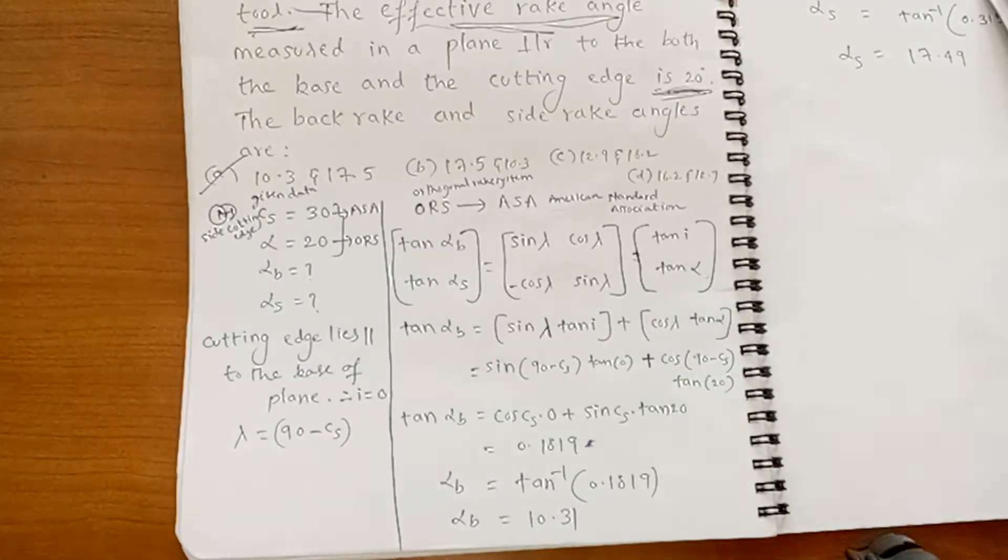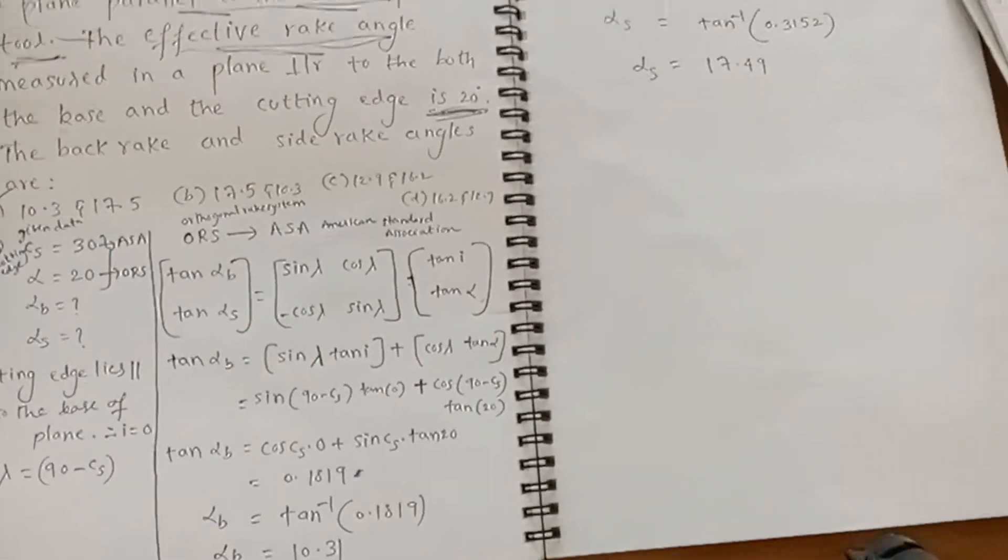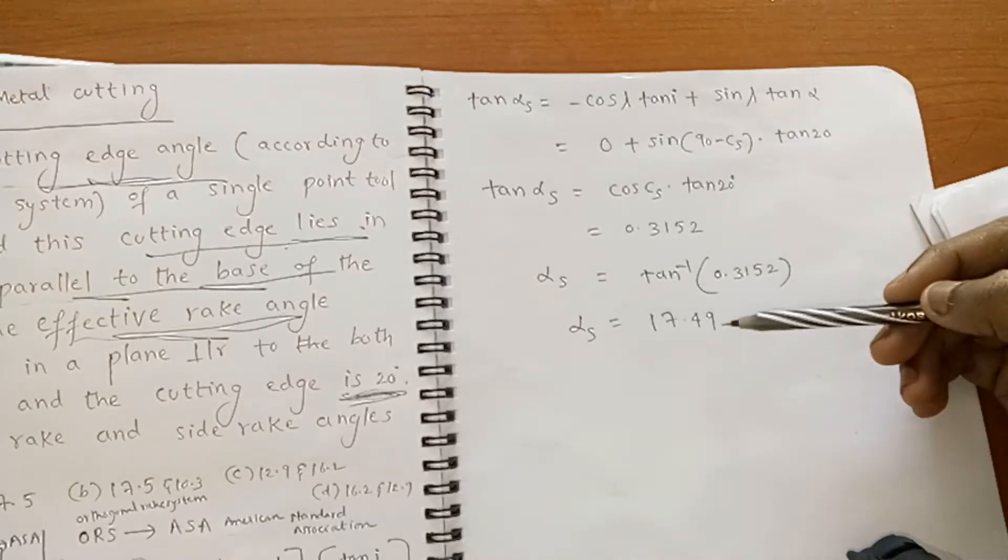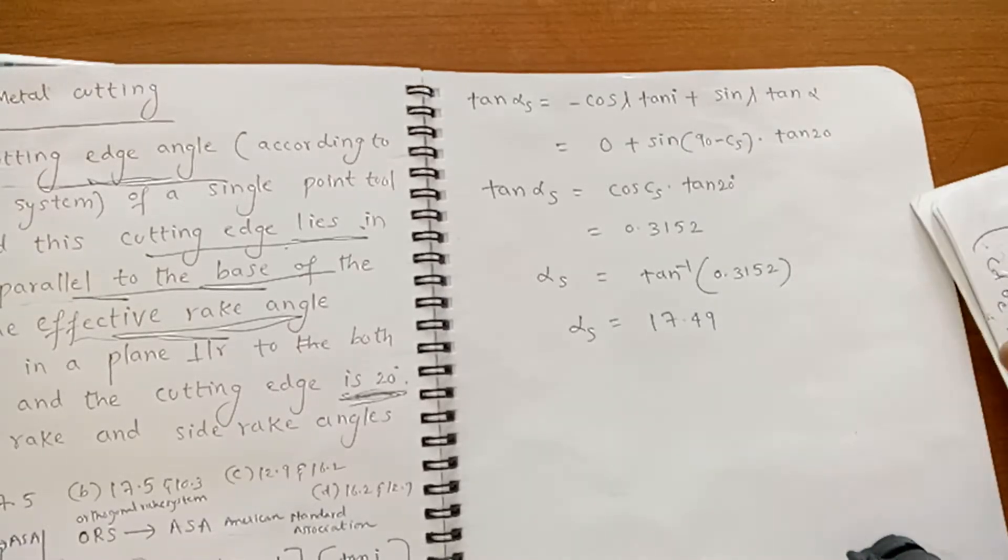The same with alpha_S also. You will get alpha_S equal to 17.49. Please solve.